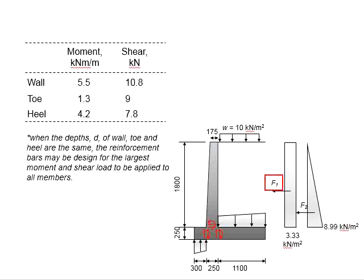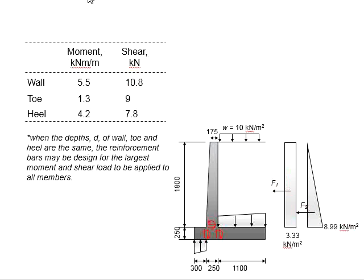Now we proceed with calculating the bending moment and shear force acting on the wall. It is determined by multiplying F1 with the lever arm distance to the interface between the base and the wall, plus F2 times its lever arm. The shear force will be the summation of the stresses. The force is calculated by the area of the stresses. For the toe, the resultant force of the stresses is to be multiplied with the lever arm to the interface joint, and the shear force will be the resultant force from the trapezoid.